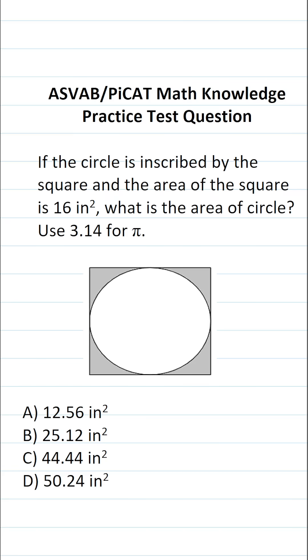This math knowledge practice test question for the ASVAB and PiCAT says, if the circle is inscribed by the square and the area of the square is 16 square inches, what is the area of the circle? Use 3.14 for pi.